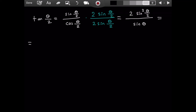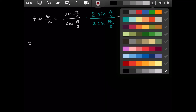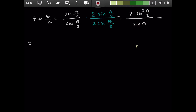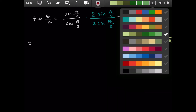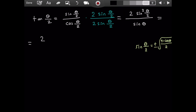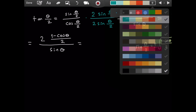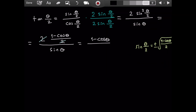Now we just need to substitute for sine squared of theta over 2. From a previous video, sine of theta divided by 2 equals plus or minus the square root of 1 minus cosine of theta divided by 2. When we square sine of theta over 2, the plus or minus is cancelled and the square root is gone, leaving 1 minus cosine of theta divided by 2. All of that divided by sine of theta. The 2s cancel, leaving us with 1 minus cosine of theta divided by sine of theta.